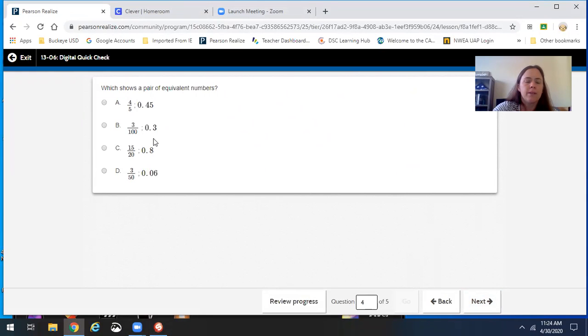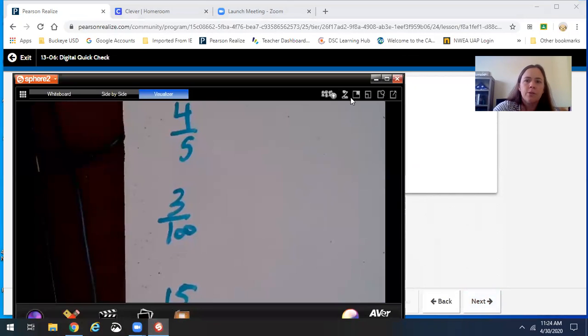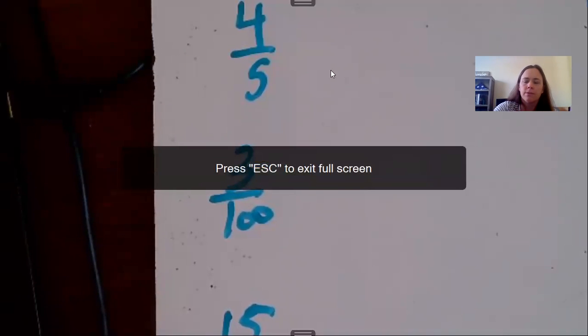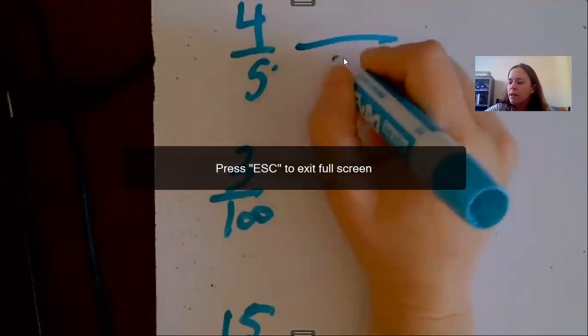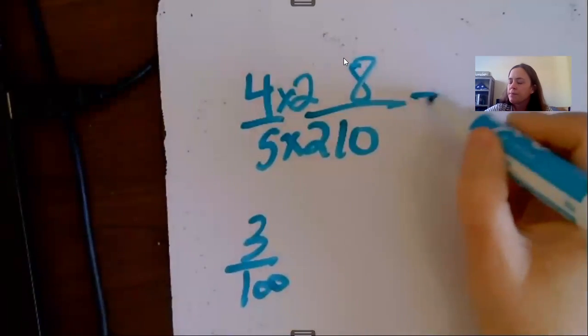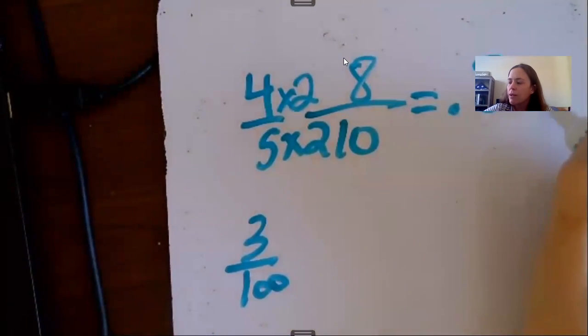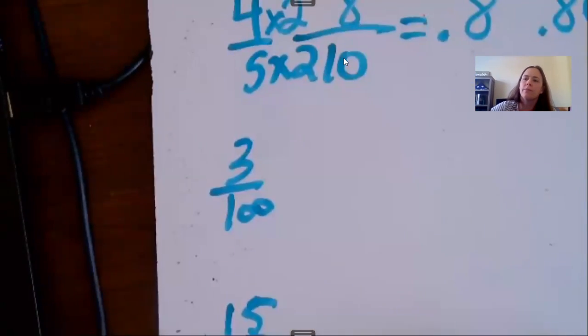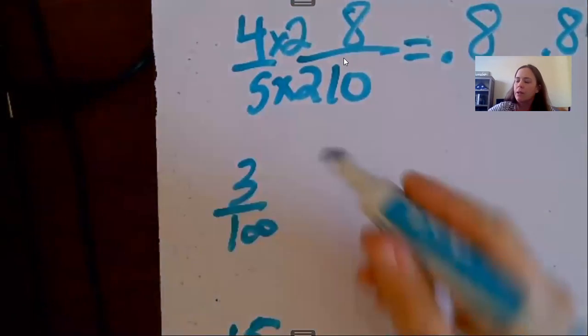Alright, and equivalent numbers, again, you kind of have to do the same thing we just did, so let me write those down. You're going to have to convert them all to decimals. 4 fifths, 3 one hundredths, which is pretty easy, 15 twentieths, 3 fiftieths. So there's no really fast and quick way to do these, except to do them. So 4 fifths, that could be a 10, 5 times 2 is 10, 4 times 2 is 8, 8 tenths is like this.